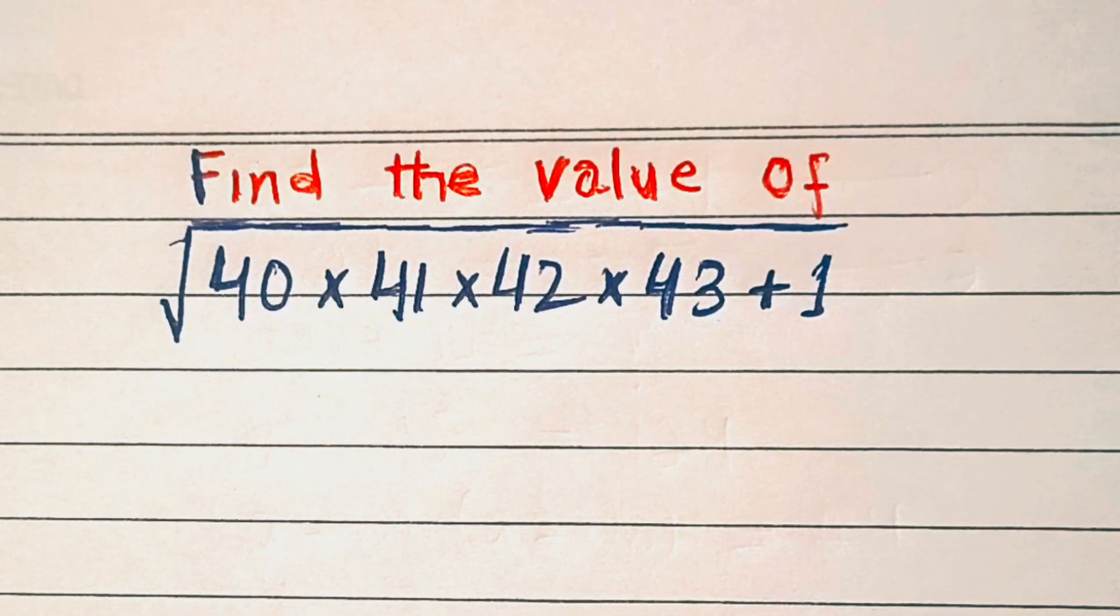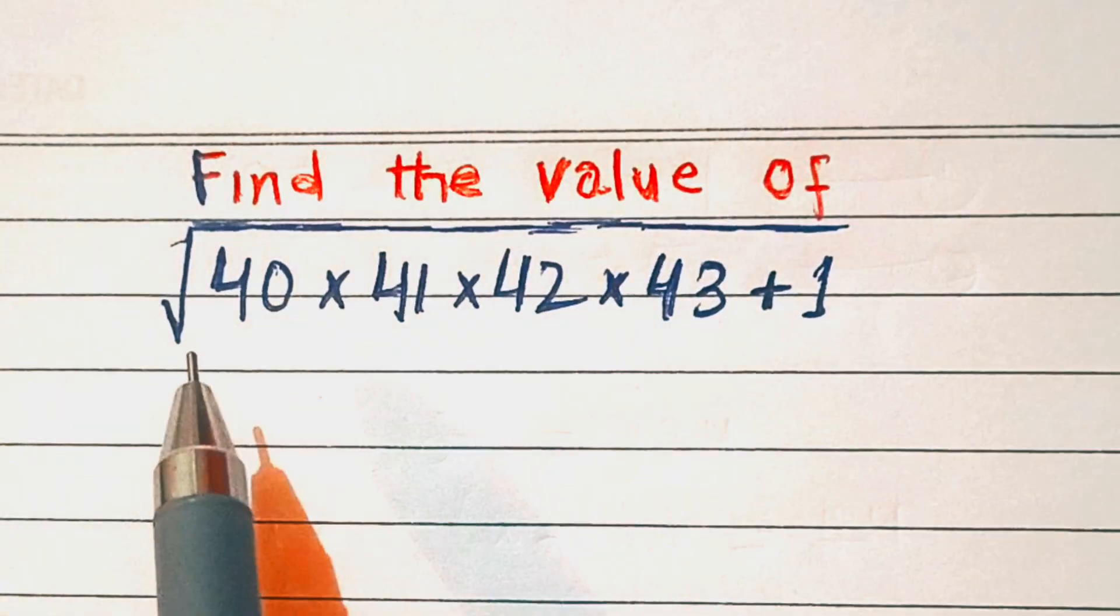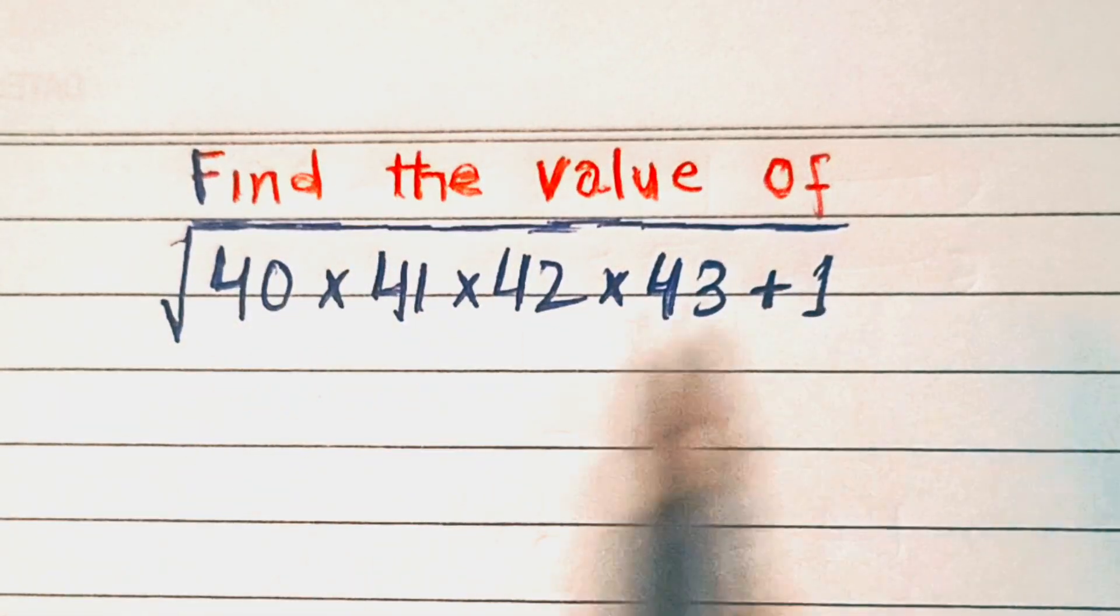Hi everyone, welcome back to my channel. In this video we will find the value of square root of 40 times 41 times 42 times 43 plus 1. Basically, these are consecutive numbers which are added to 1.